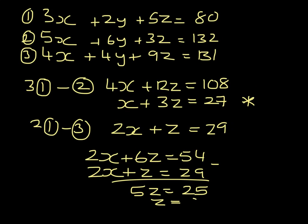So z would equal 5. If z is 5, then 2x plus 5 is 29, 2x is 24, x is 12.